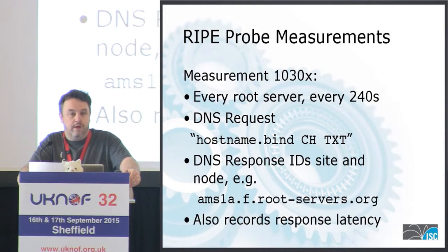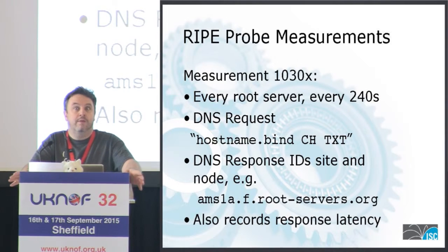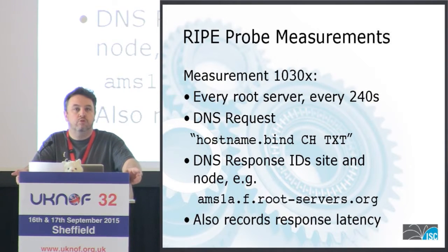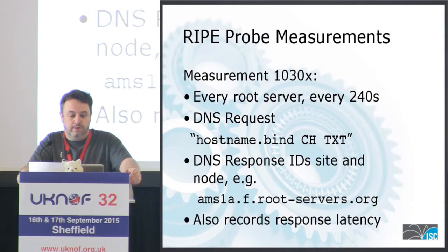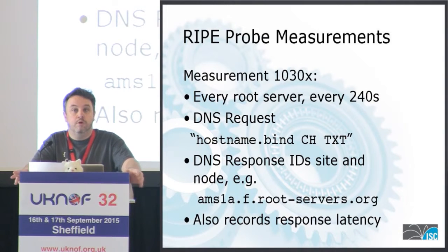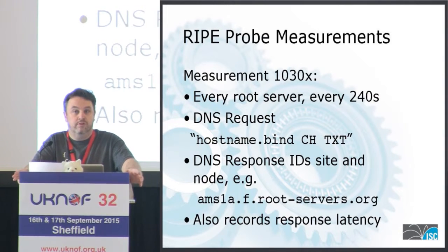Our servers are all configured to return the actual server site and the server instance. In this case, you can see we've got AMS — obviously an Amsterdam node. We typically use IATA site names. It's 1A because there are two servers that are load balanced, so it's the A half of the load balanced cluster. And we get the latency back. So essentially from every RIPE probe, we can see which instance is being hit and what the latency is for that site.